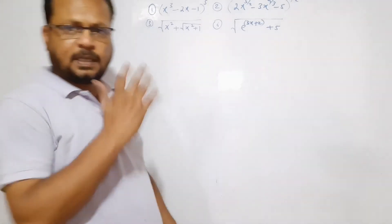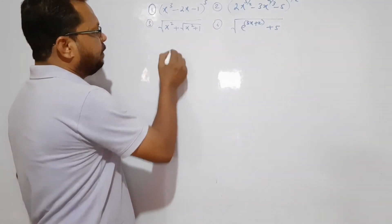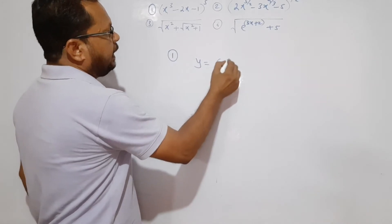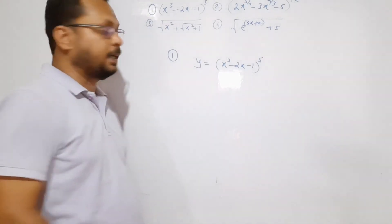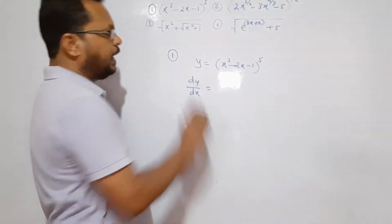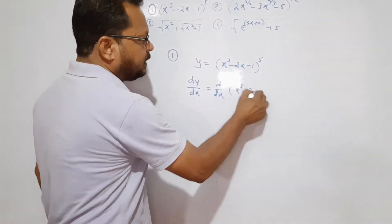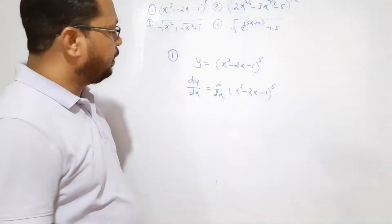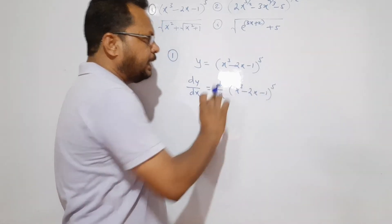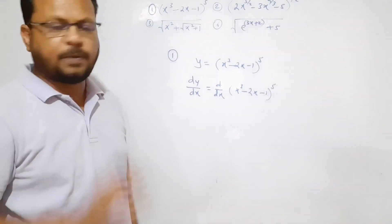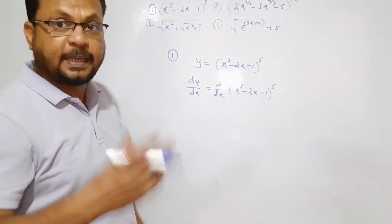The first example is (x³ - 2x - 1) raised to 5. Differentiating with respect to x, we have dy/dx = d/dx of (x³ - 2x - 1)⁵. It is simply a polynomial inside brackets raised to the power 5, which makes it a composite function.